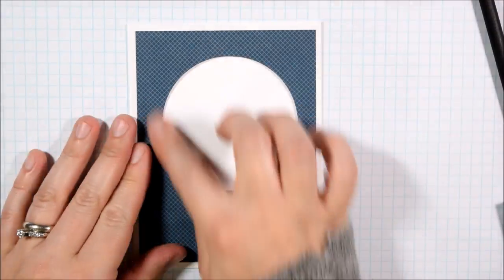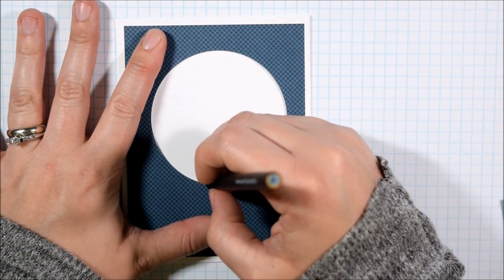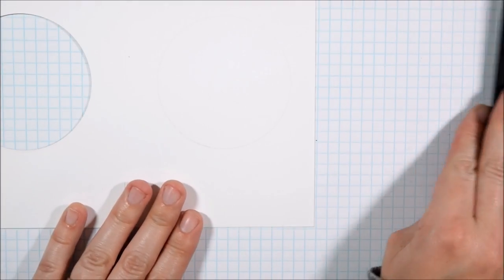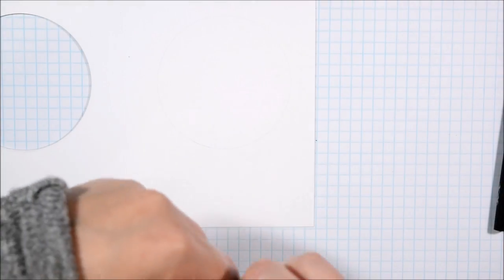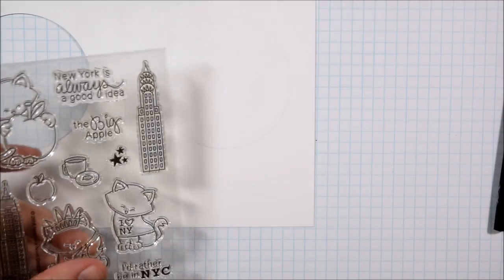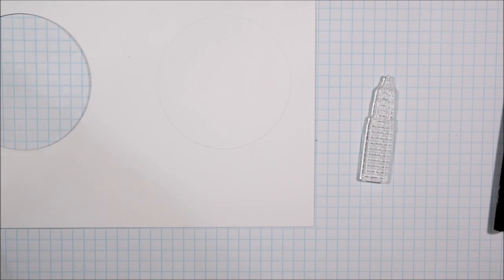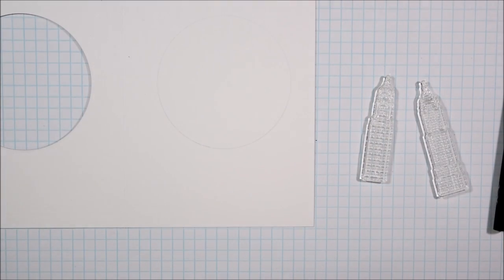I'm using the stitched circle stackables from MFT. I also cut a piece of pattern paper to be about a quarter inch smaller than my card front and to have the same size circle as the card and as that white panel that's going on the inside.